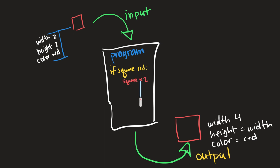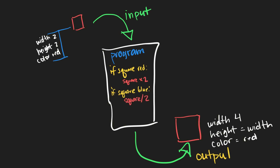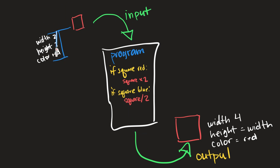If the square is red, multiply its width and height by 2 — in other words, double the size. We could also have another condition: if square is blue, divide the square by 2, which decreases its size. We can use conditionals to control the way data flows through our program. Since we only have instructions for red or blue, if the square is any other color that piece of data just won't flow through the application.